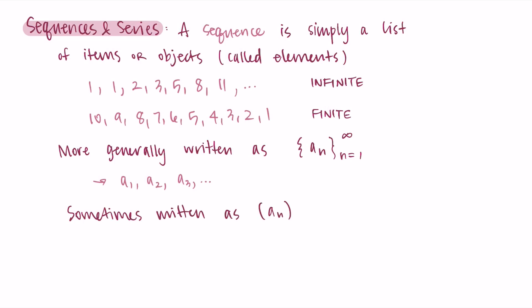You might see something like a sub n where n is a natural number. That would also be an infinite sequence. Or they would write n equals 1 to infinity. We often see infinite sequences rather than finite ones, so that's why I'm highlighting those here with the infinities.